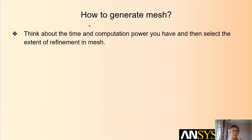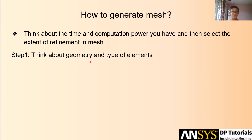The first step: the first point you should always keep in the back of your mind is that you should think about the time and computation power you have, and then select the extent of refinement in mesh. Think about the geometry — is it a very simple geometry with simple shapes such as cube, cuboid, spheres? Or is it a more complex geometry such as a human face, which has highs, deeps, surfaces, curves — everything. Such complex geometry will require different kinds of elements, while simple geometry will have more simplified elements like basic swept elements.